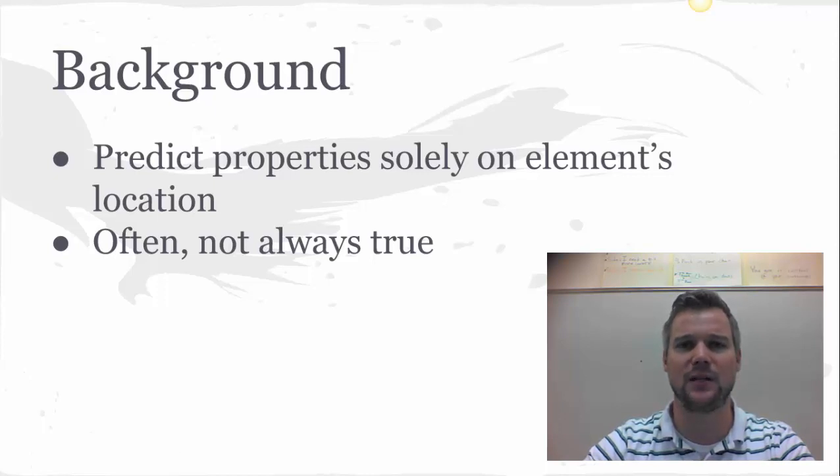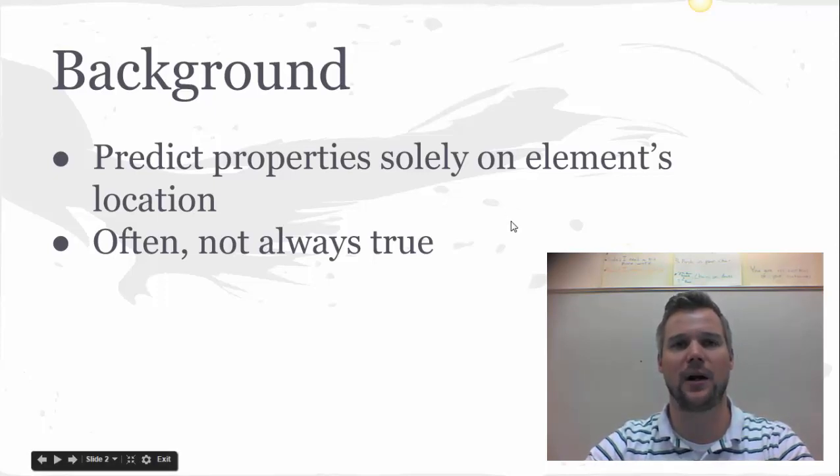We're predicting these properties just based on where that element happens to live on the periodic table, specifically sometimes in relation to its neighbors. These trends, it's important to know, are often the case and often predictors of the properties, but we can't know for sure. The predicted property is often true but not always true. The only way to truly know the actual properties is to do a lab experiment to actually determine those properties.